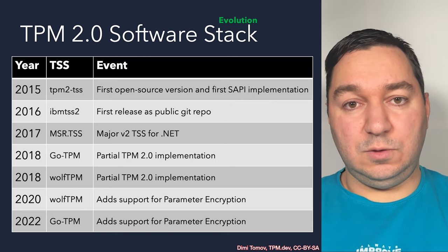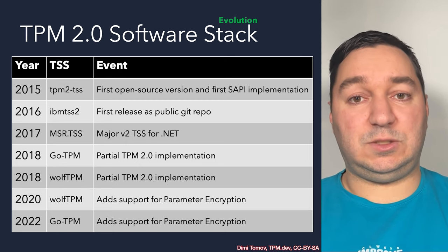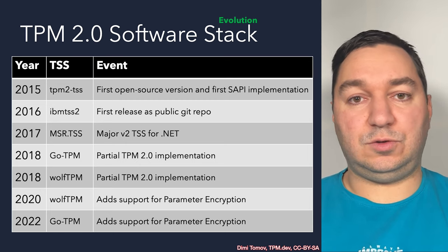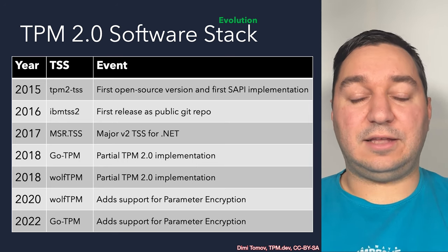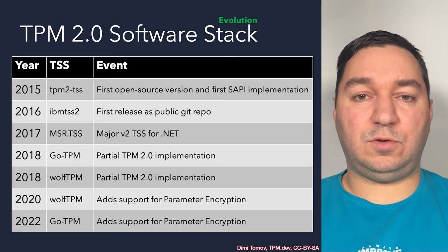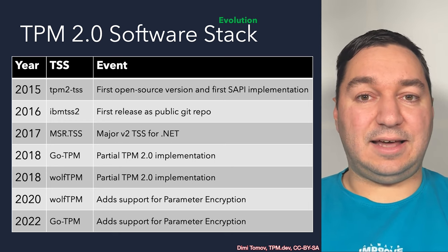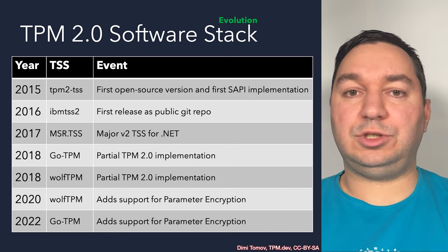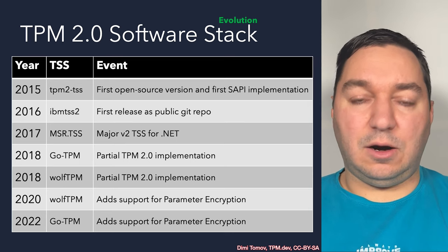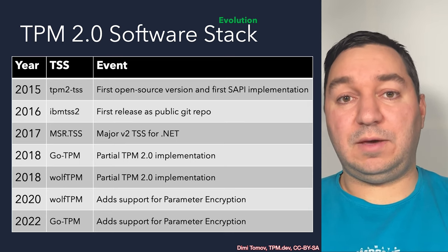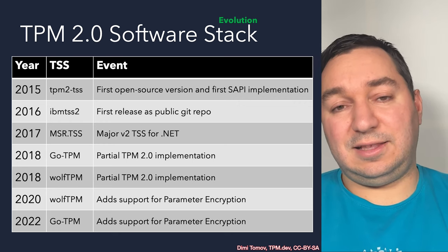There are many good things that happened to the TPM software stacks throughout the years, especially after the first introduction of SAPI in 2015. By 2018 we had five different TPM software libraries to choose from. We added the Microsoft stack with a major version 2 for its .NET version with almost every possible TPM functionality supported — a major milestone for Microsoft and the industry.